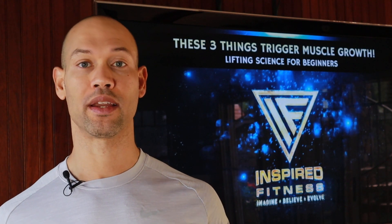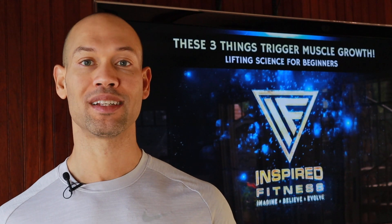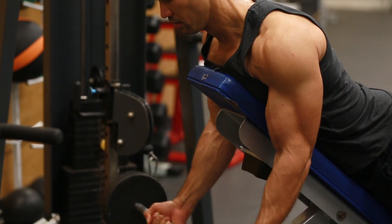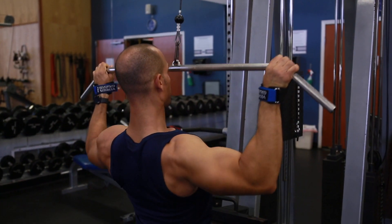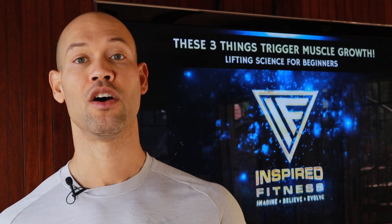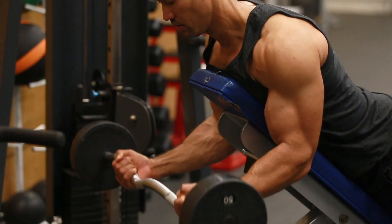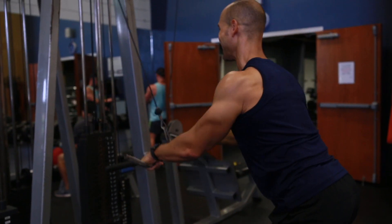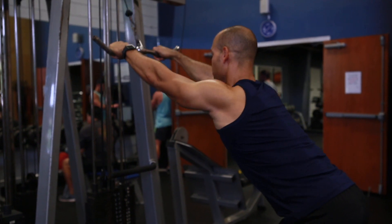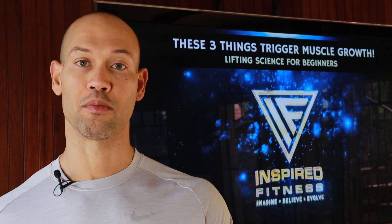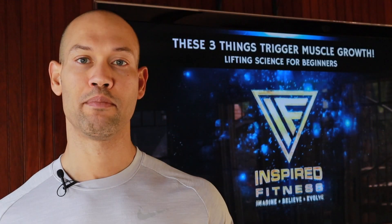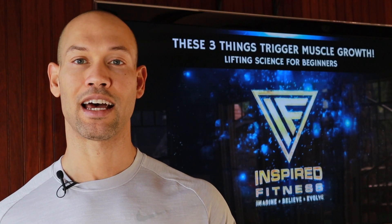First up: muscle tension. What is it and how does it contribute to hypertrophy? The word tension, as it relates to muscular contraction, refers to the force that your muscle is able to generate either while it is shortening — during the concentric portion of a movement — or while it's lengthening, during the eccentric portion. When muscular tension is greater than the load or weight you're trying to move, the muscle shortens — that's the concentric. When the tension within your muscle is less than the load during the eccentric portion, the muscle is lengthening.